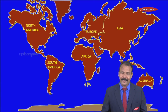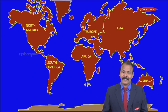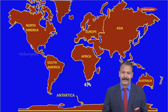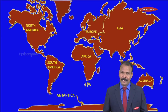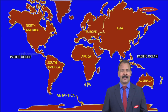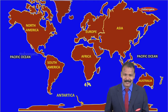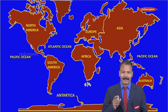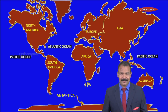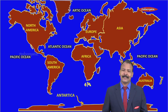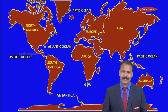Asia, Australia, and the seventh one is Antarctica. Similarly, the names of the oceans are: Pacific Ocean on both sides, then Atlantic Ocean, then Arctic Ocean, and lastly Indian Ocean.